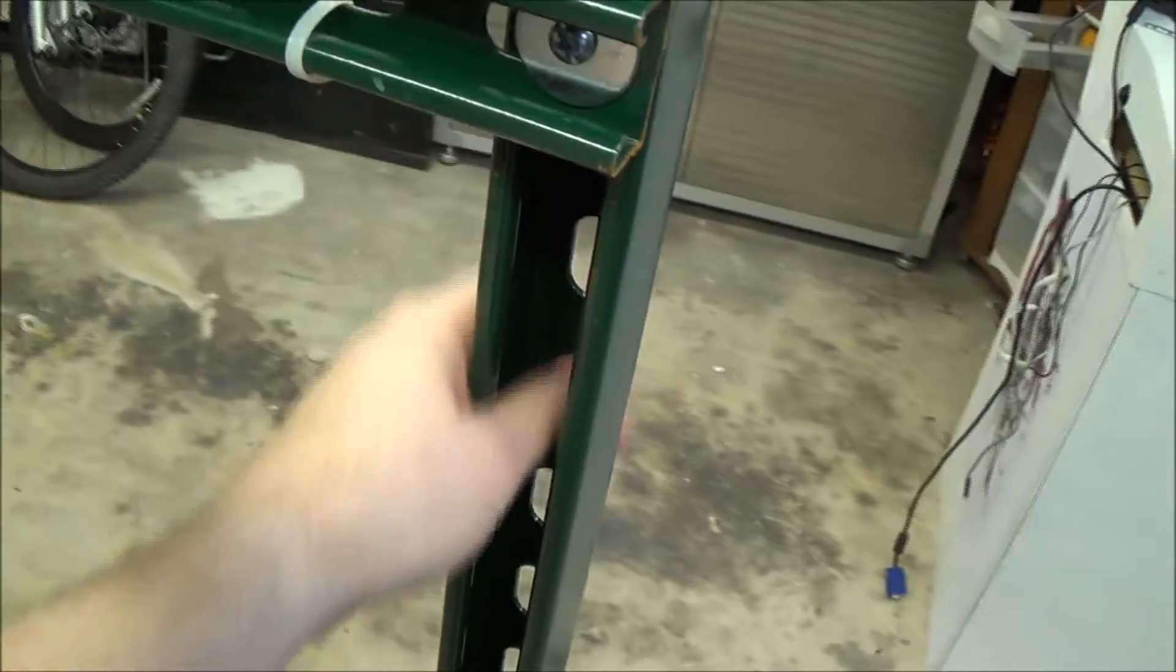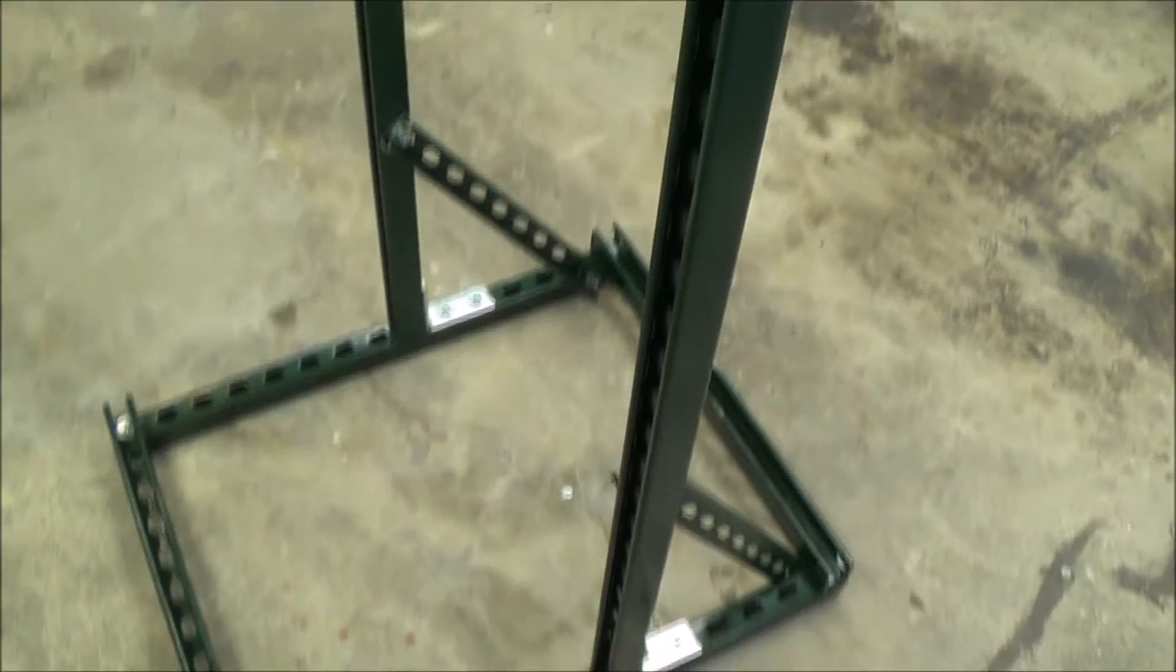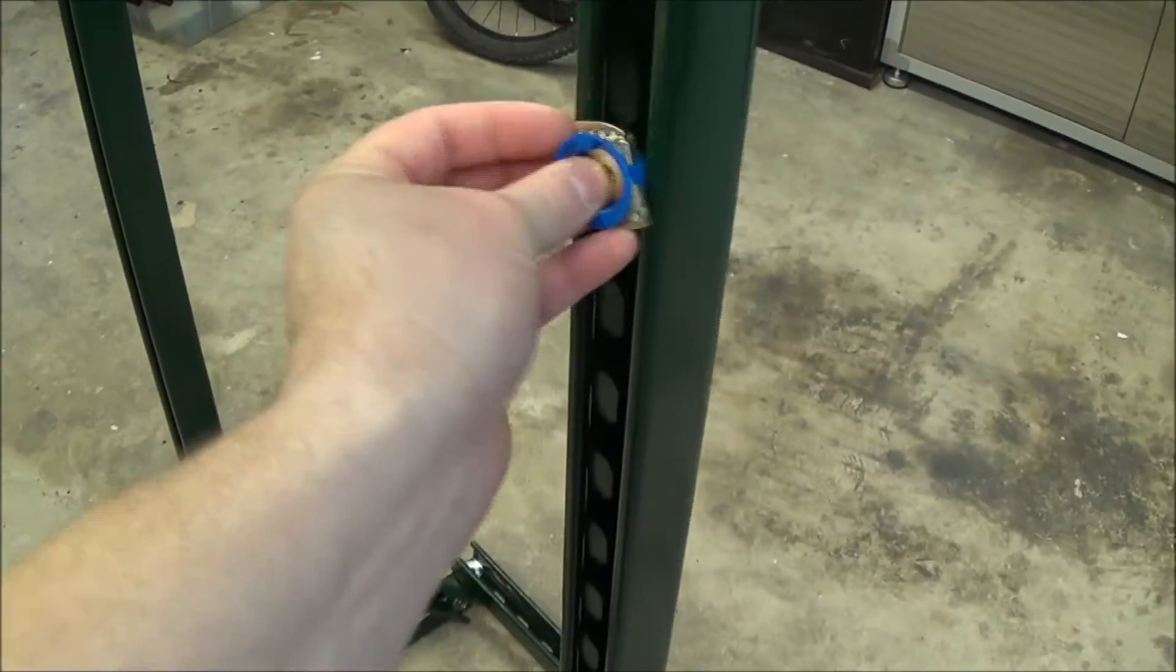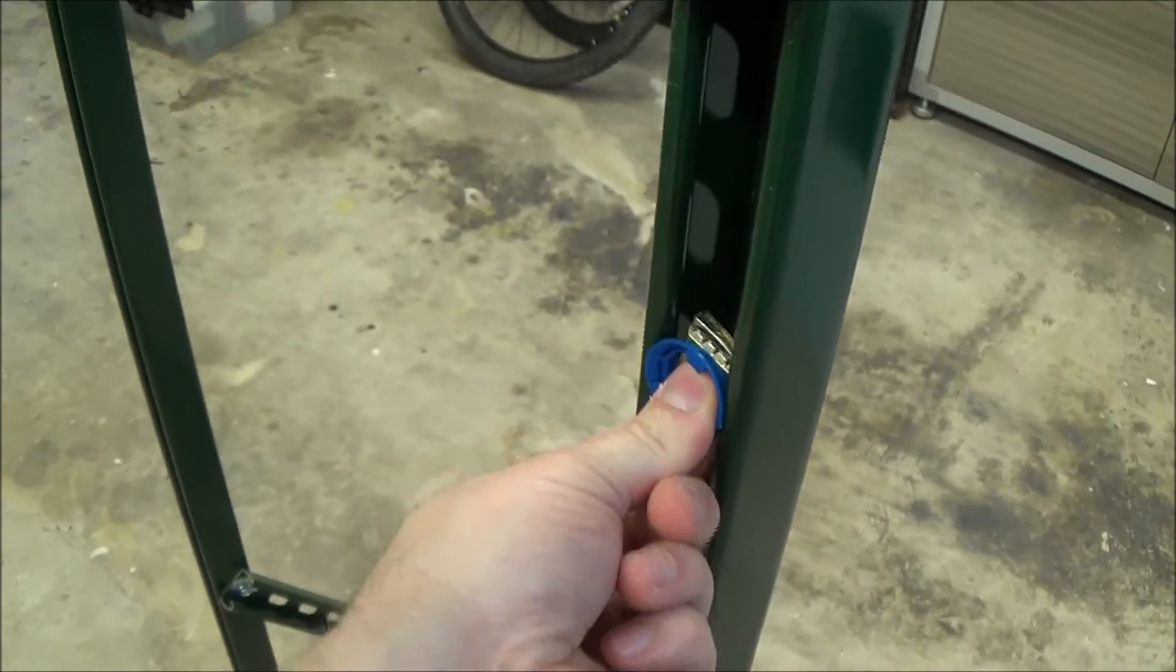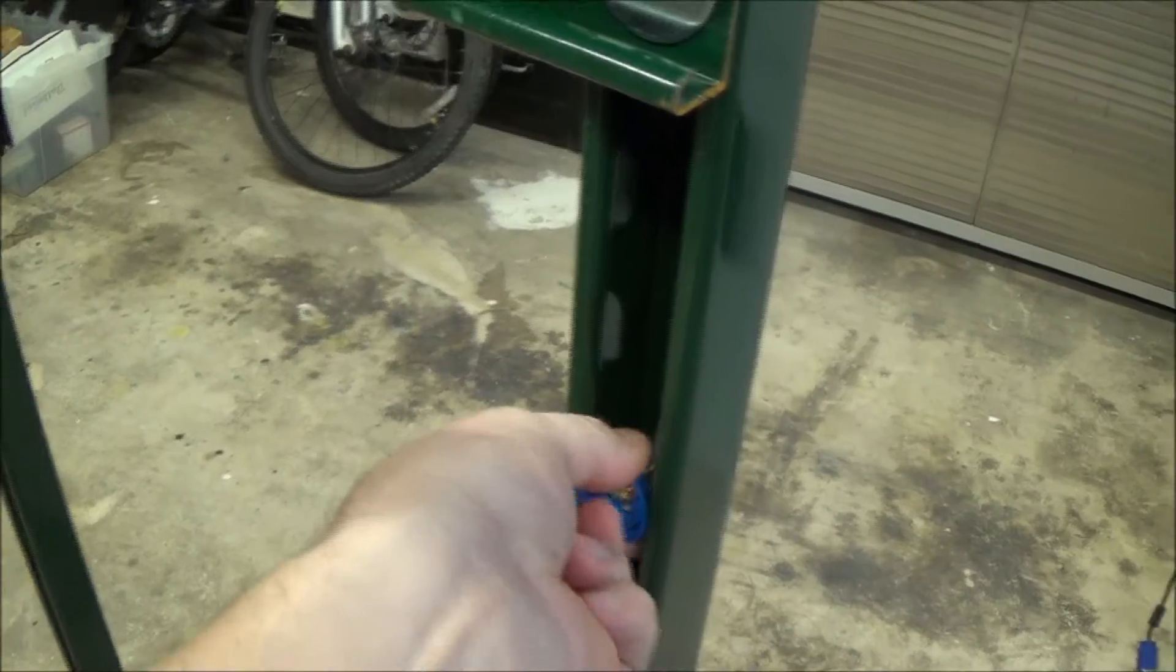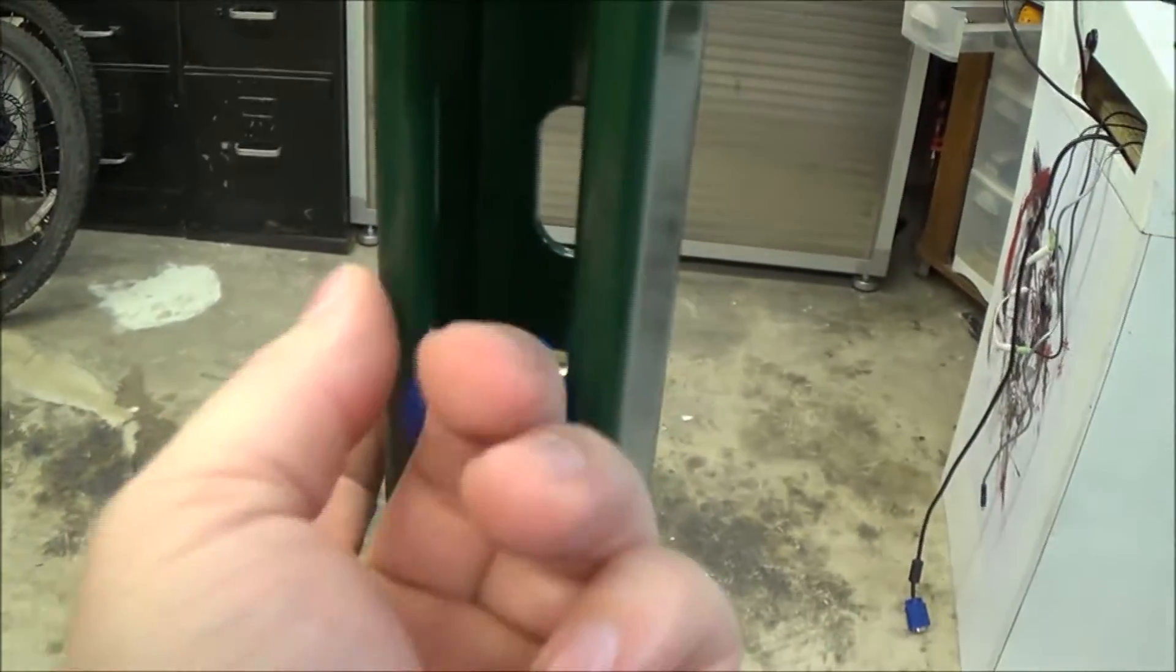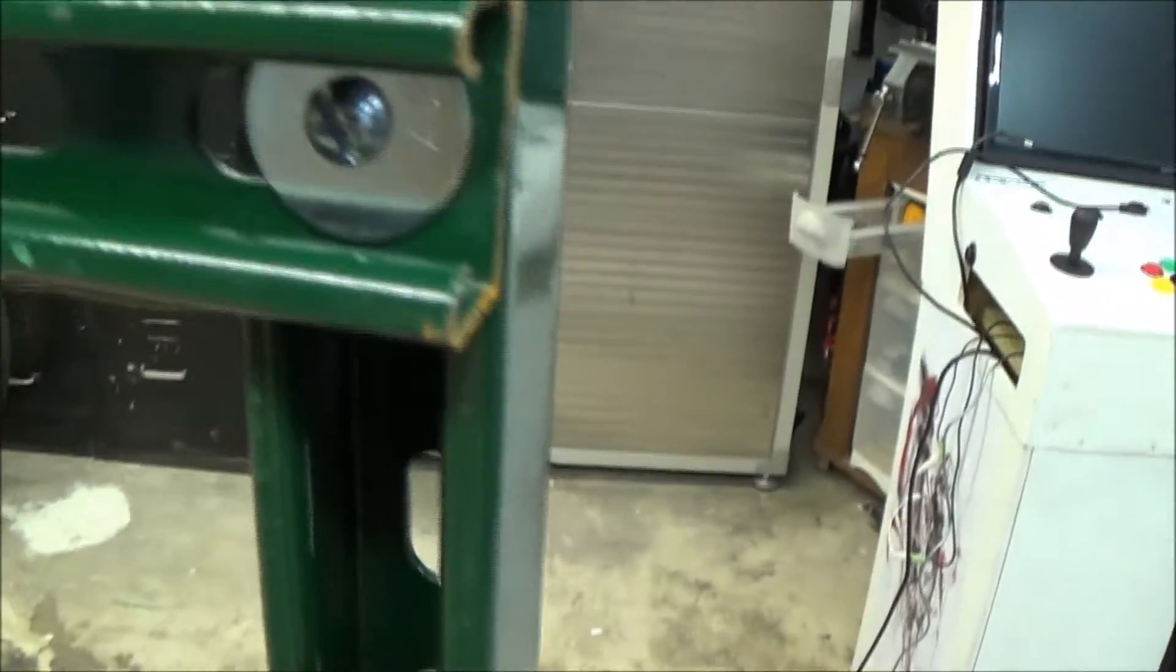This is called slotted strut. You can get this at any electrical parts store. Great for building things with. You can get these, they're normally called spring nuts. Go ahead and stick it in there and give it a little turn. And there you've got a nice nut there that you can bolt things onto. That's how this stuff is all put together.